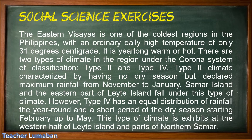Type 4 has an equal distribution of rainfall year-round and a short dry season starting from February up to May. This type of climate is exhibited at the western half of Leyte Island and parts of northern Samar.